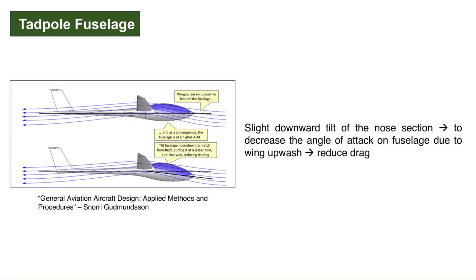Another design consideration is the slight downward tilt of the nose section. Due to the upwash ahead of the wing, the front fuselage sees a higher angle of attack, which increases its drag. To decrease this angle of attack, the nose section has a downward tilt, which results in lower drag.